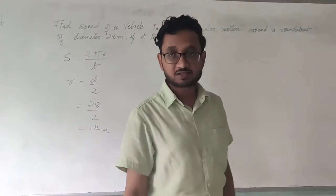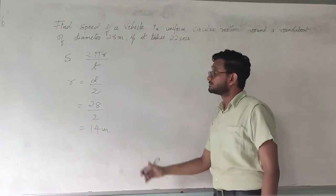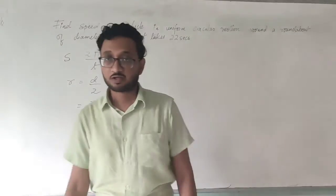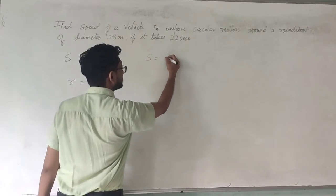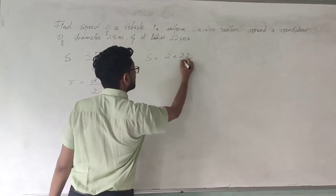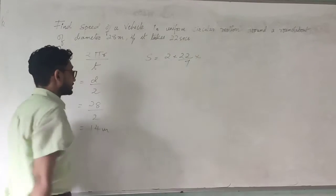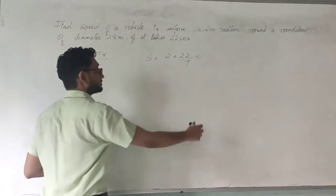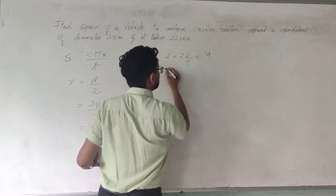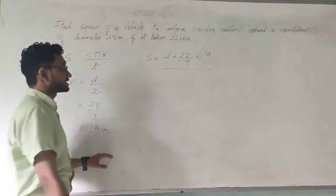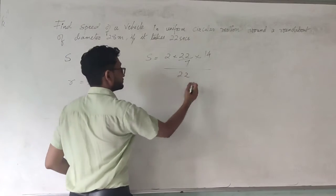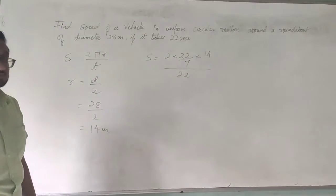So now that you have the radius, you have the time as well. You just need to solve by applying the formula. So s is equal to 2 into 22 upon 7 into radius is 14 meters, and you divide by the time taken that is 22 seconds.